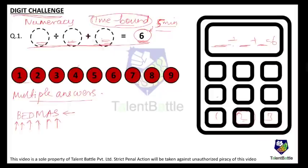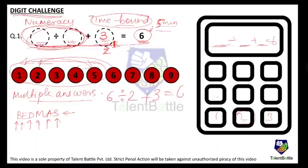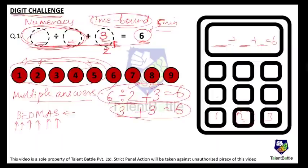The format is: blank plus something divided by something equals 6. If I fill the first blank with 1, I need the remaining two numbers to give 5 — but I've already used 1, so 5/1 is not possible. If I try 2, I need 4 from the remaining — 8/2 works but 2 is already used. If I try 3, I need 3 from the remaining: 6 divided by 2 is 3, plus 3 equals 6. All three digits are different — this works!